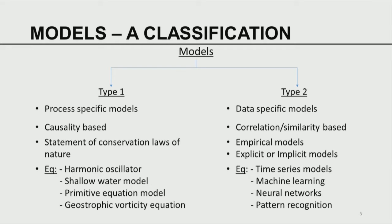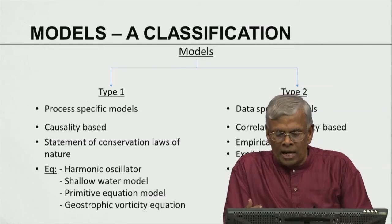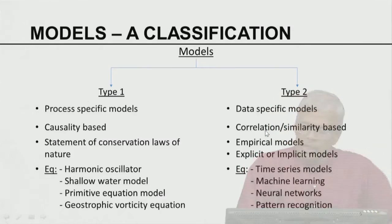As opposed to process-based models, the second type are called data-specific models. Here there is no underlying causation — no cause or effect. All that we have is the availability of a bunch of data, which are observations of mother nature. Given observations of nature's behavior at various times, it is up to us to mine the underlying information. That mining is done by finding the correlation between the data — this is also called correlation-based or similarity-based modeling. These models are essentially empirical as opposed to being based on physical principles. These models can be either explicit or implicit.